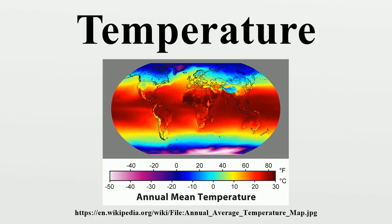Temperature scales differ in two ways: the point chosen as zero degrees, and the magnitudes of incremental units or degrees on the scale. The Celsius scale is used for common temperature measurements in most of the world. It is an empirical scale, developed by historical progress which led to its 0.0 degrees Celsius being defined by the freezing point of water, with additional degrees defined so that 100 degrees Celsius was the boiling point of water.